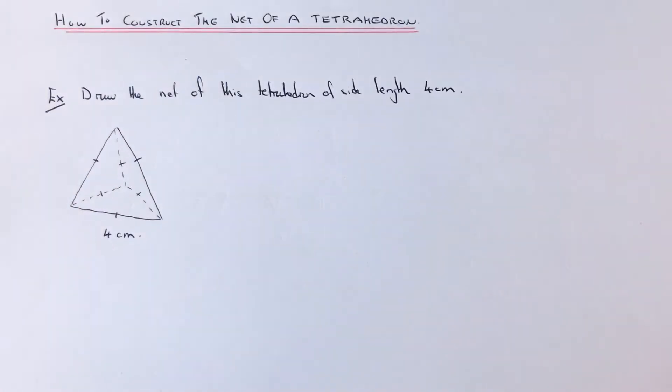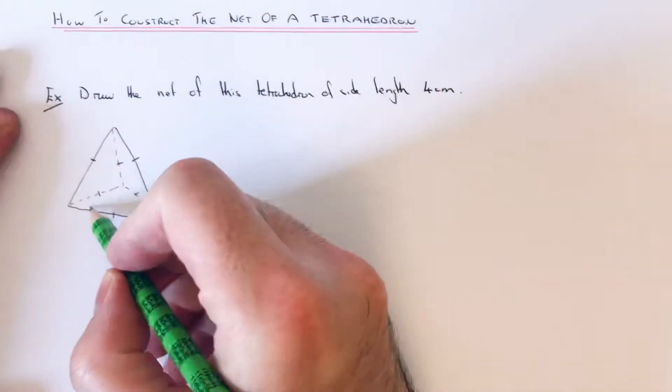A regular tetrahedron has six edges which are all the same size. In the example that we've got, we need to draw this regular tetrahedron of a side length four centimeters. First of all, let's start off with our bottom face.